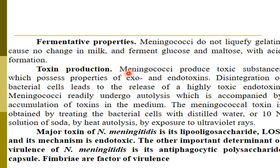Regarding toxin production, the meningococci — Neisseria meningitidis — produce toxic substances which possess properties of both exo- and endotoxins. The disintegration of bacterial cells leads to the release of a highly toxic endotoxin. Meningococci readily undergo autolysis, accompanied by accumulation of toxins in the media. The Neisseria meningitidis toxin is obtained by treating bacterial cells with distilled water, normal saline, or by heat autolysis or exposure to ultraviolet rays.